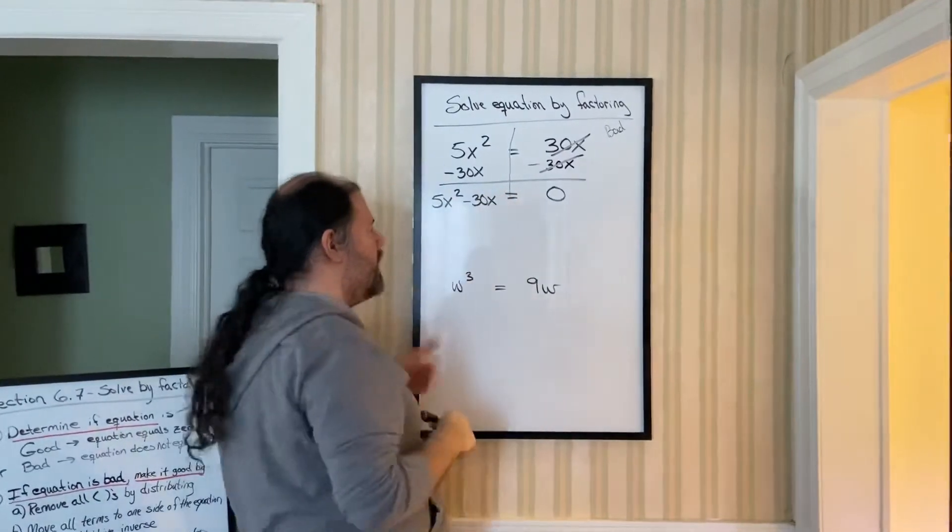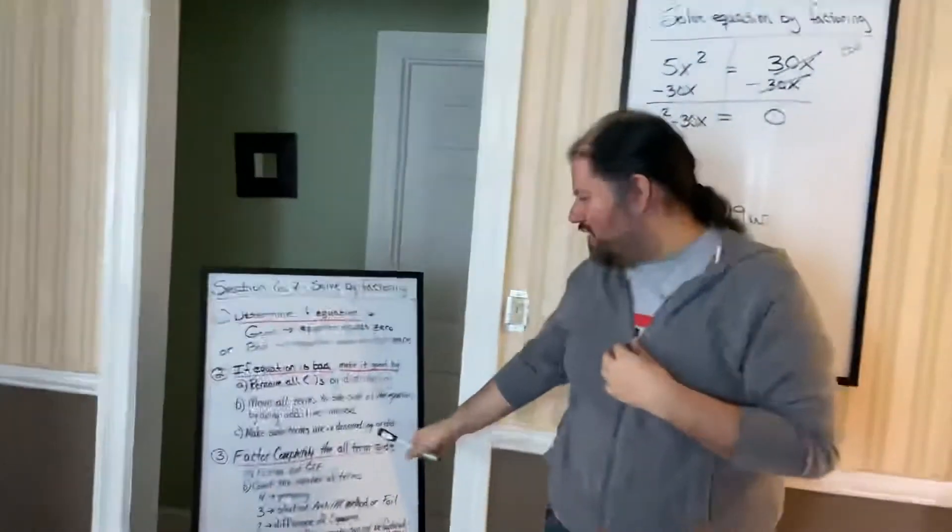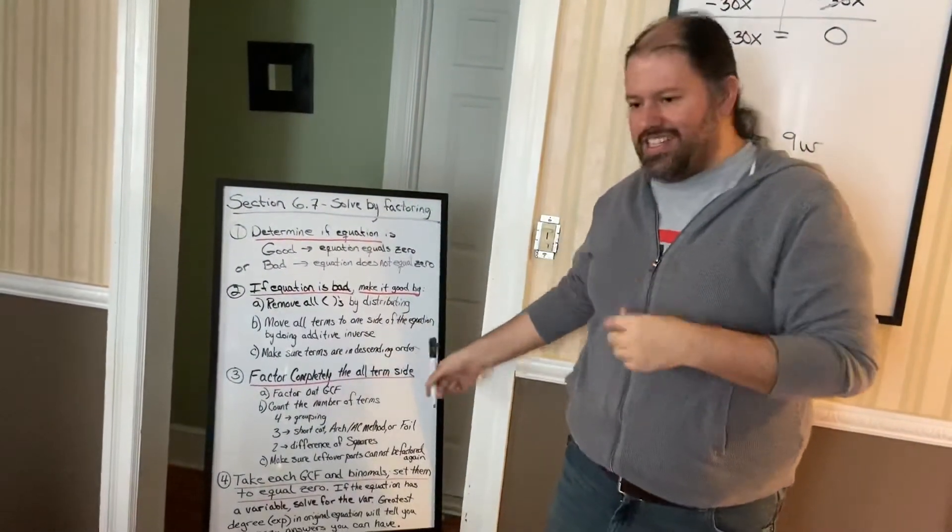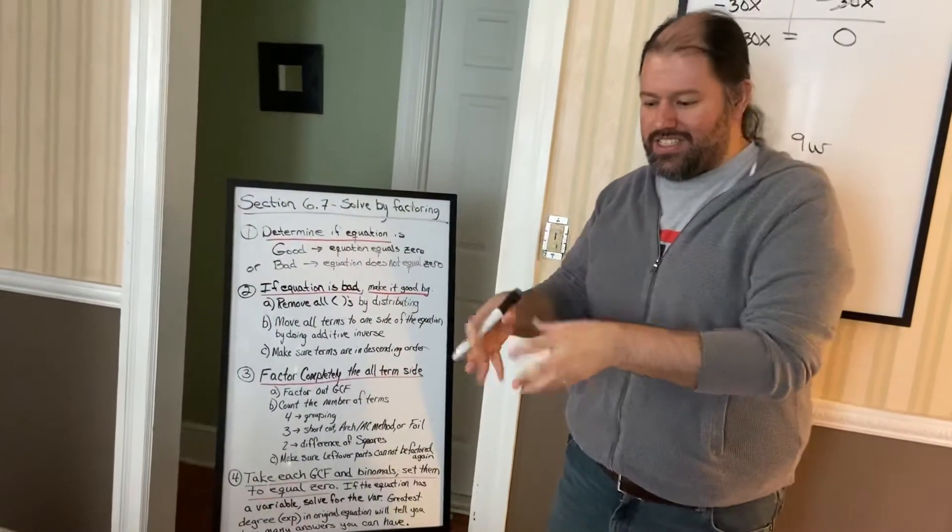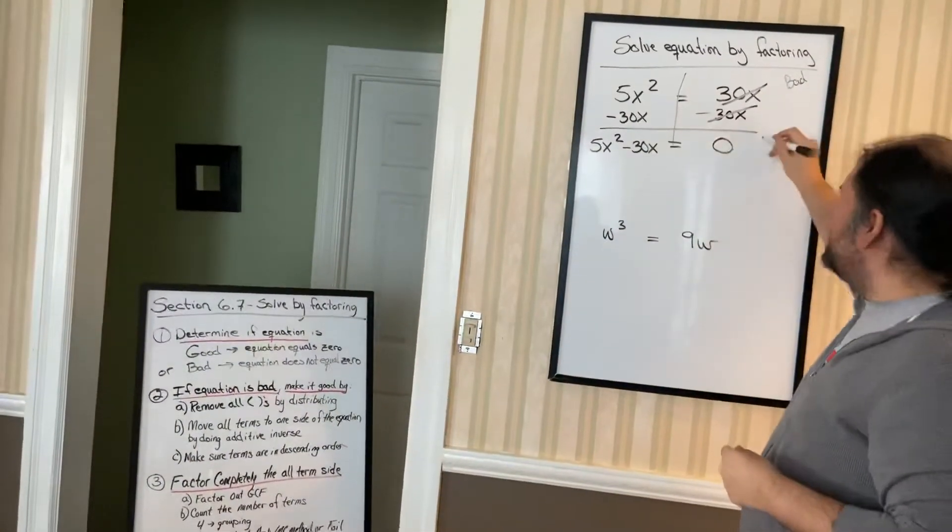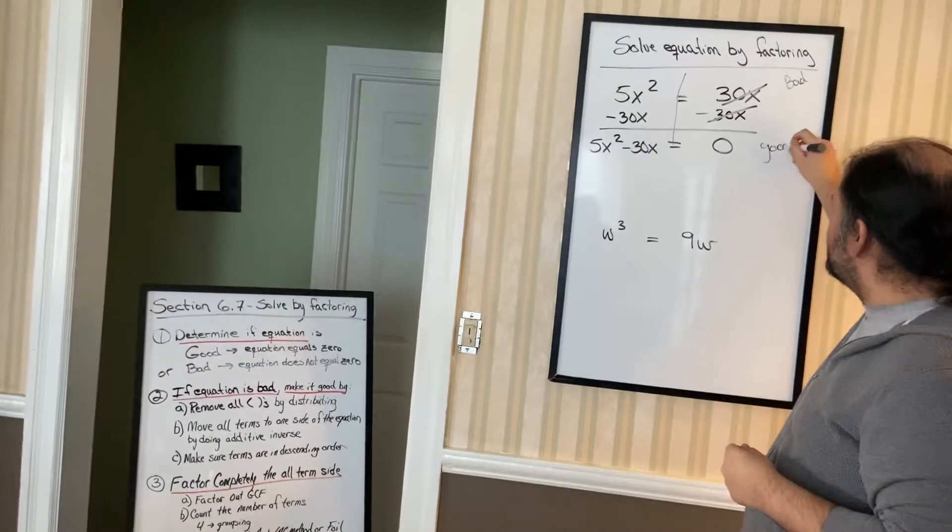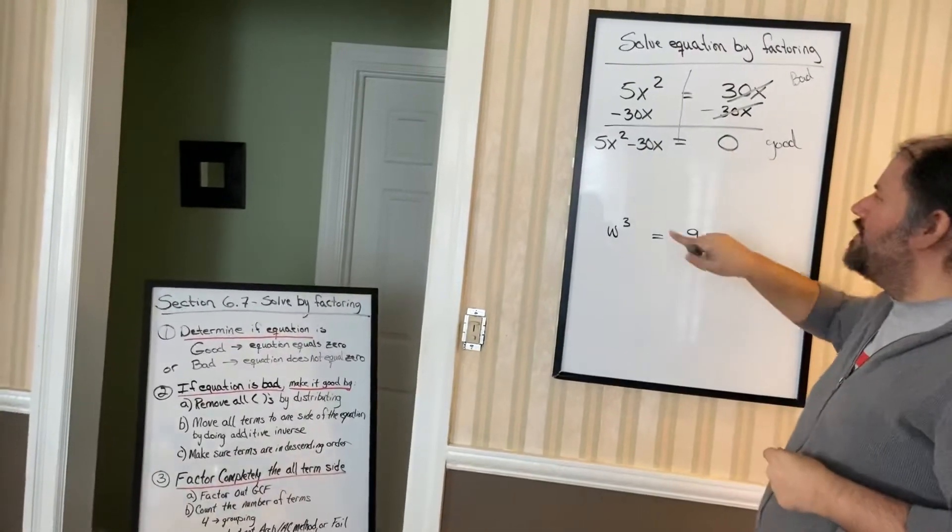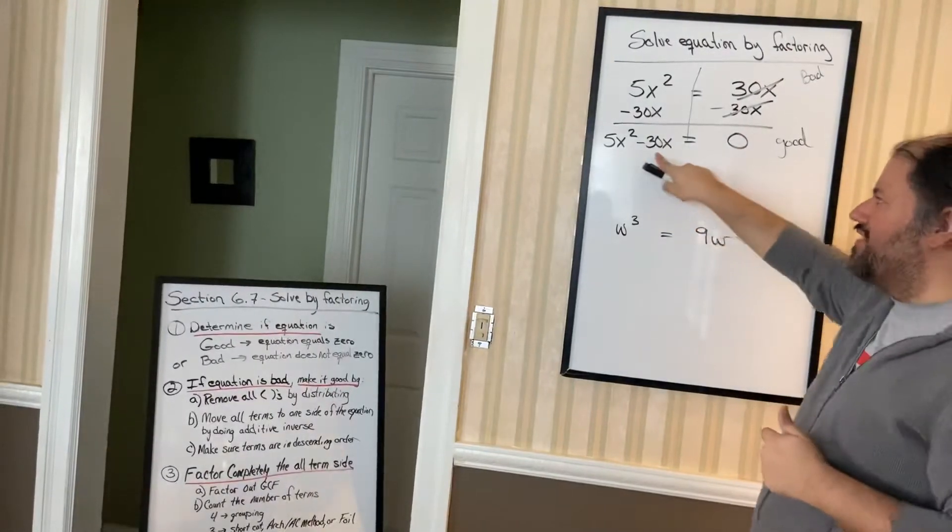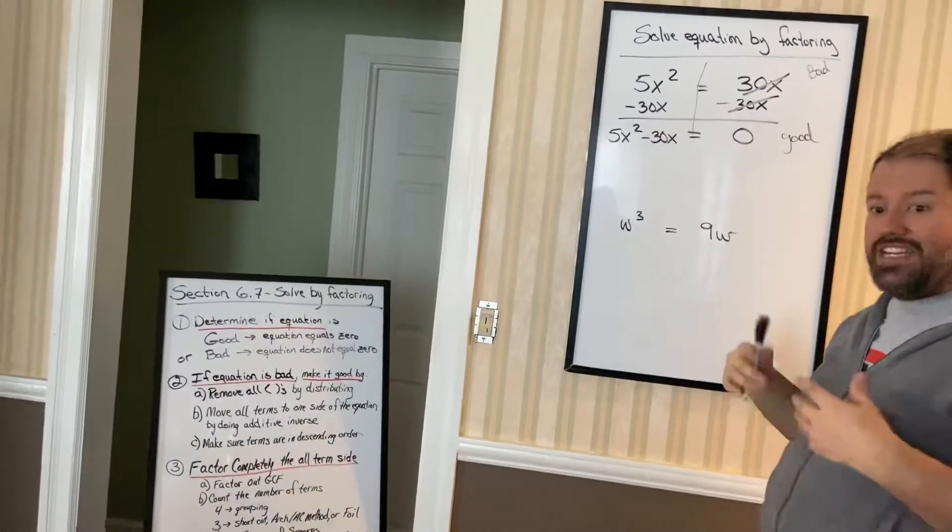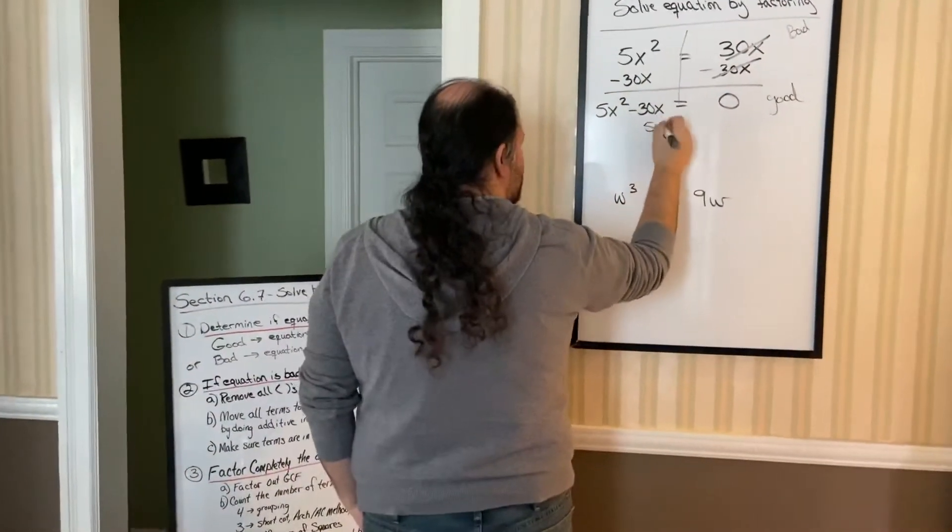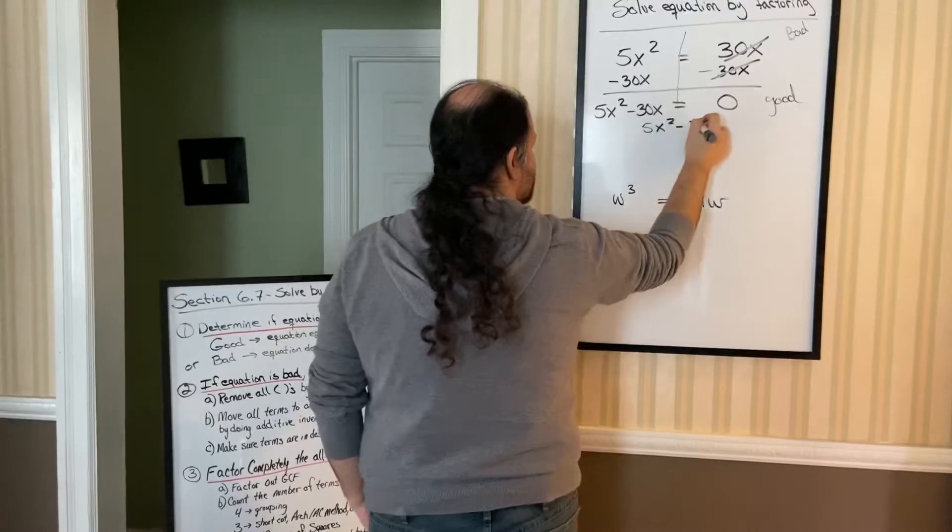The reason why we put it in this order is because, remember, we told you, make sure terms are in descending order. That means you want your highest degree down to the constant. So now that it is good, what we're going to do, this has nothing to factor out. This is my term sign. The term sign, let's factor out that completely. So ignore the equal zero, and notice we have 5x squared minus 30x.